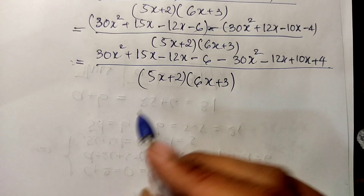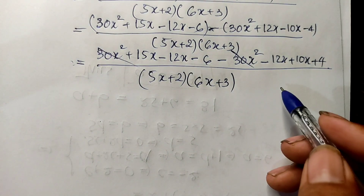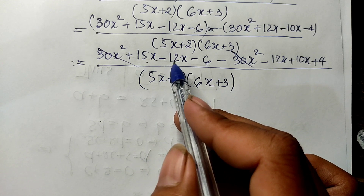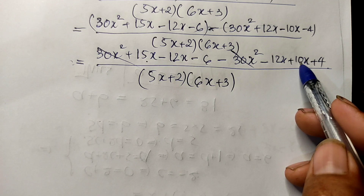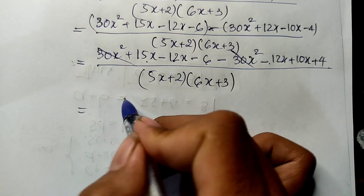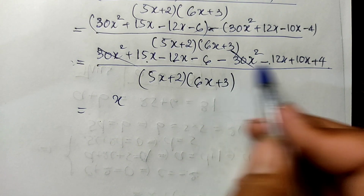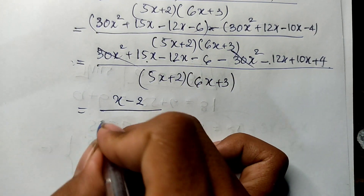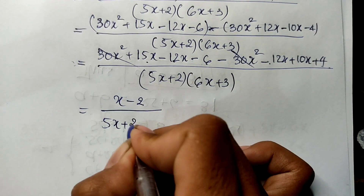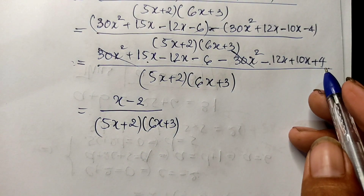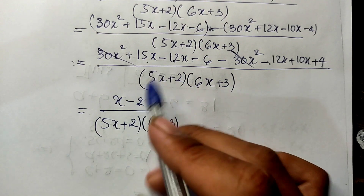Now simplifying: 15x minus 12 equals 3, and 3 plus 10 equals 13, and 13 minus 12 gives 8, and 8 minus 8 plus 4 gives minus 2. So the numerator is minus 2, divided by (5x + 2)(6x + 3), which is positive.